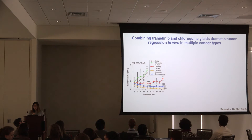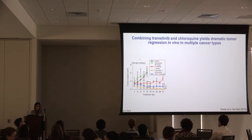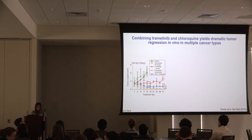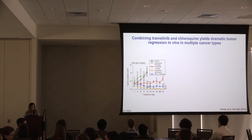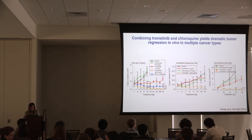Previous work in our lab led by Dr. Kinsey implanted patient-derived xenografts into immunocompromised mice. Using a KRAS-mutated pancreatic cancer PDX, tumor volume over time showed that chloroquine alone or trametinib alone did not cause regression, but the trametinib and chloroquine combination was the only therapy to lead to tumor regression — and appeared superior to gemcitabine-abraxane, the current standard of care for pancreatic cancer. This was also shown in an NRAS-mutated melanoma PDX and an NRAS-mutated colorectal cancer PDX.